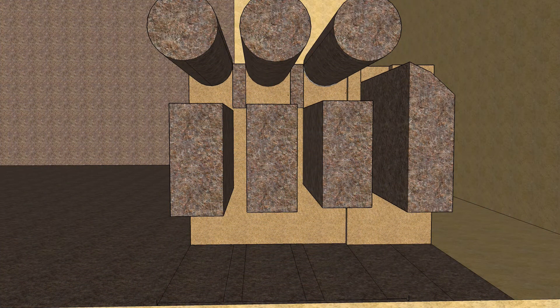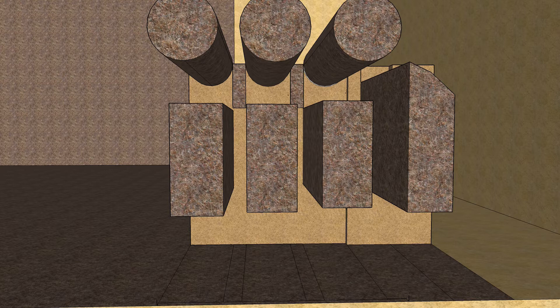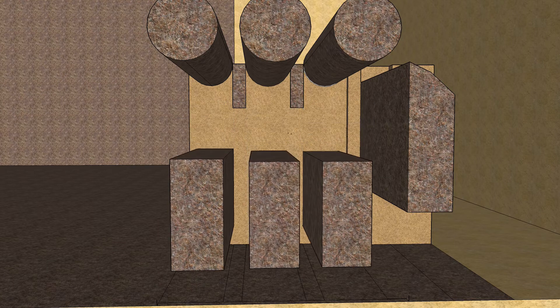The most popular is that this was a type of portcullis to hold granite stones up out of the way until Khufu's remains could be buried, then the stones could be lowered to seal off the entrance to the King's Chamber.